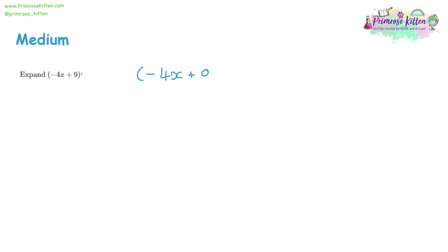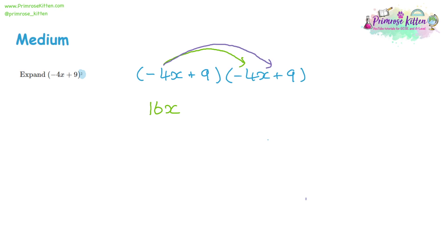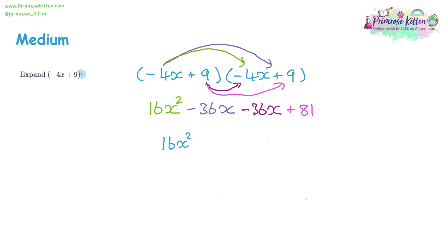Moving on to a more complicated example: expanding (−4x + 9)². The squared symbol means we have two of the same bracket. Negative 4x times negative 4x gives positive 16x². Then −4x times 9 gives −36x, and 9 times −4x is another −36x. Finally 9 times 9 is 81. So our final answer is 16x² minus 72x plus 81.